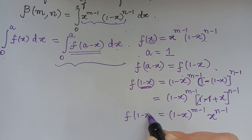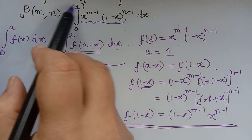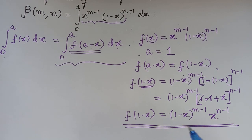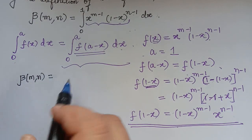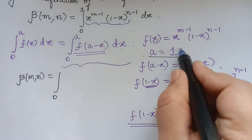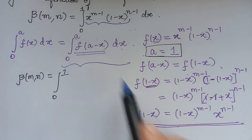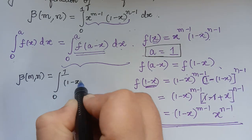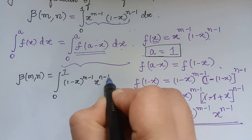So therefore f of 1 minus x is equal to 1 minus x to the power m minus 1 multiplied with x to the power n minus 1. Now we can replace the beta integral by this. So beta of m, n is equal to integral 0 to 1 of f of 1 minus x dx, which gives us integral 0 to 1 of 1 minus x to the power m minus 1 multiplied with x to the power n minus 1 dx.